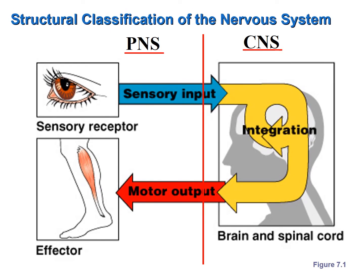Relating the structural classification to the functions figure: the central nervous system — brain and spinal cord — is where integration occurs. Both the sensory receptors that detect stimuli and the nerve fibers that carry sensory input are in the peripheral nervous system, outside the brain and spinal cord. Likewise, the nerve fibers that carry motor output out to the effectors are also in the peripheral nervous system.